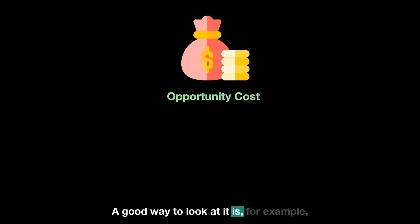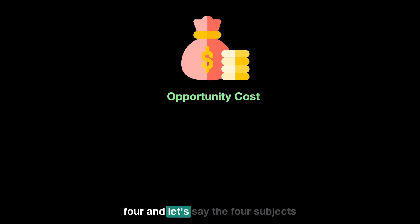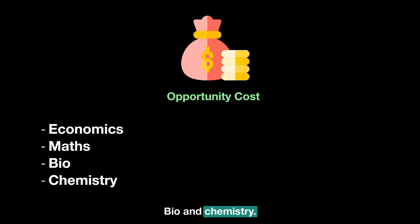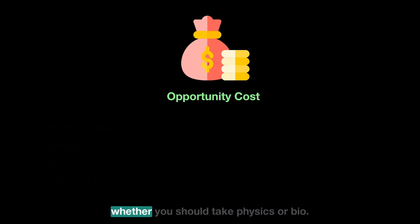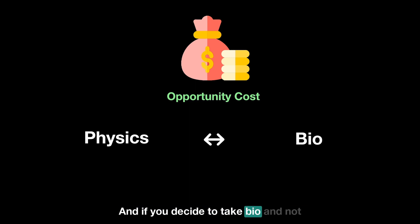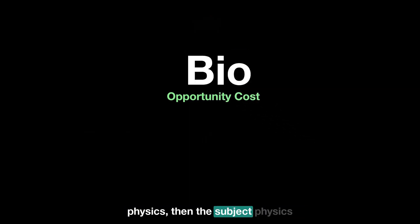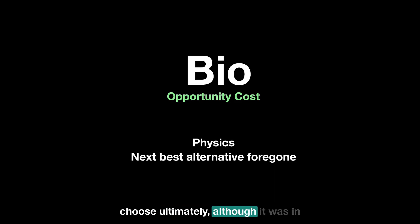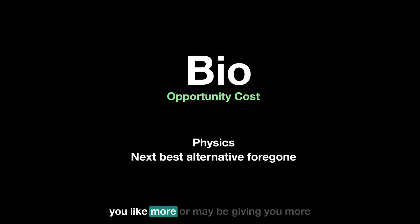For example, say you are choosing A-level subjects and you have to pick four. The four you've chosen are Economics, Maths, Biology, and Chemistry. But suppose you were deciding between Physics and Biology — if you decide to take Biology and not Physics, then Physics becomes your opportunity cost. It's the next best alternative forgone — a good you decided not to choose, even though you liked it.